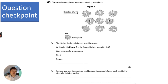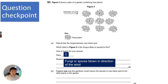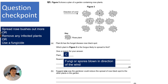For the rose black spot question: given a diagram of rose plants with plant A infected and a wind direction shown, the fungus is likely to spread to plant C first, because the spores are spread by wind and blown in the direction of the wind. To reduce spread, the gardener could space rose bushes further apart, remove and destroy infected plants, or spray with fungicide.